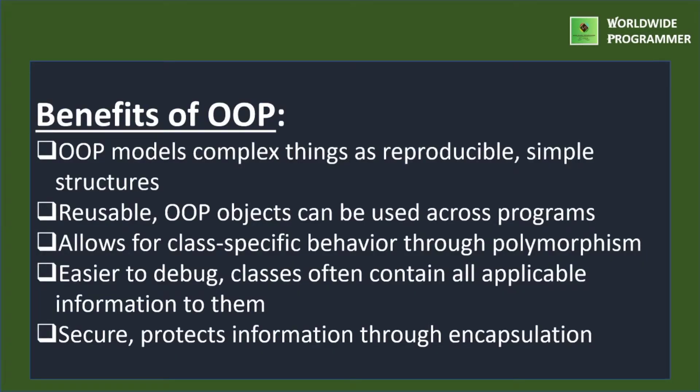Benefits of object-oriented programming: OOP models complex things as reproducible simple structures. Reusable OOP objects can be used across programs. It allows for class-specific behavior through polymorphism. It is easier to debug, as classes often contain all applicable information to them. And it is secure — it protects information through encapsulation.